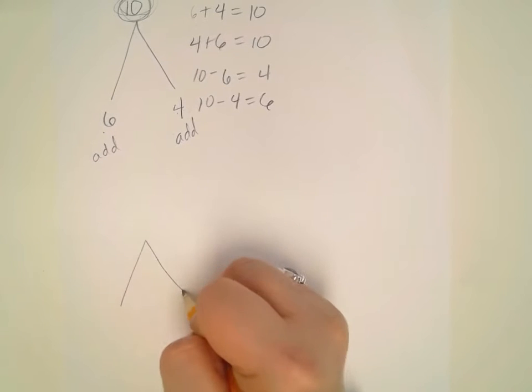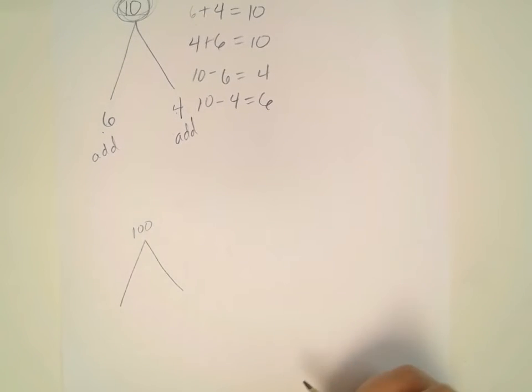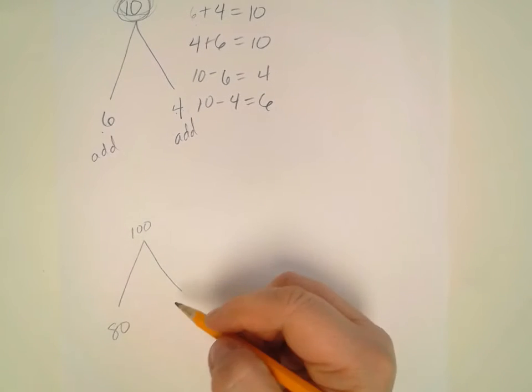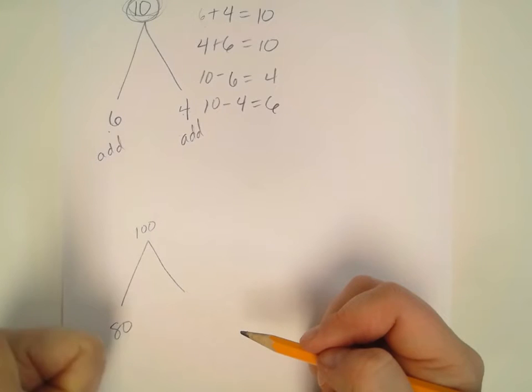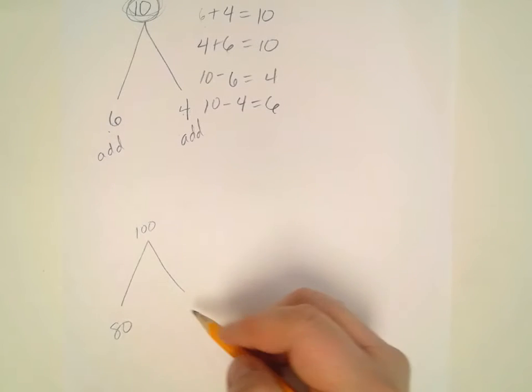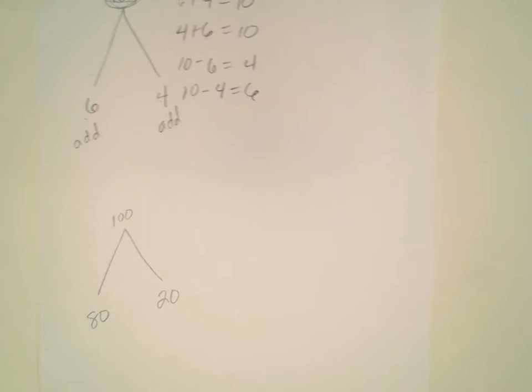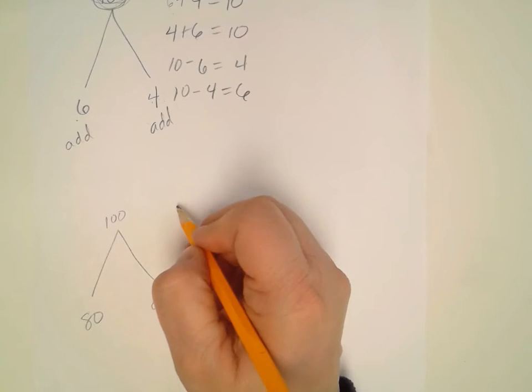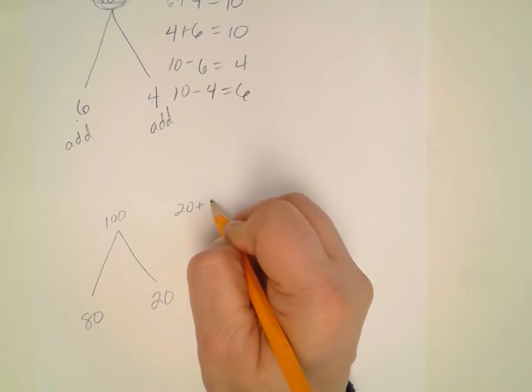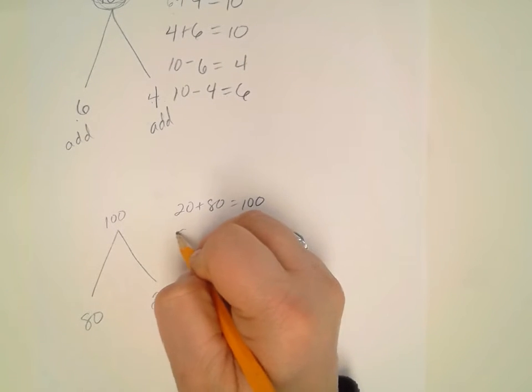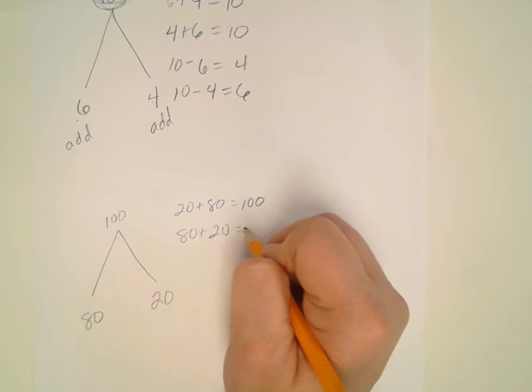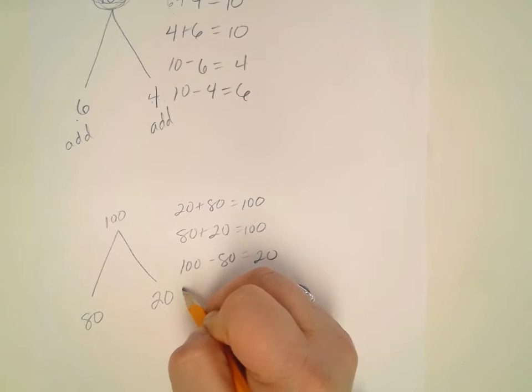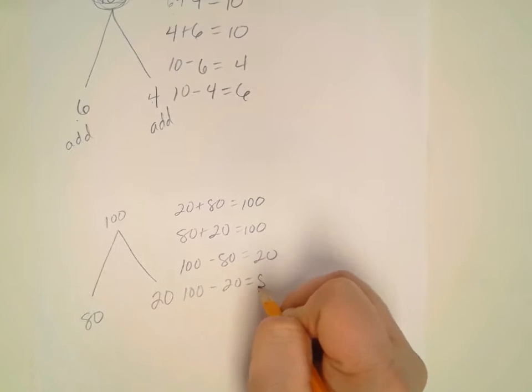So here we have that math mountain. Here we have 100 at the top, and then say we have 80. And then we can count up from 80, 80, 90, 100. So I counted 2 to 10. So that's 20. So now we're turning this into a slightly more advanced number. So we have 20 plus 80 equals 100, 80 plus 20 equals 100, 100 minus 80 equals 20, and 100 minus 20 equals 80. So there we go. We got a little bit more involved there.